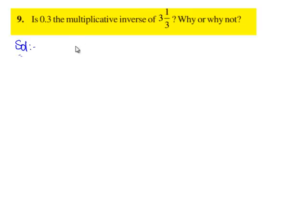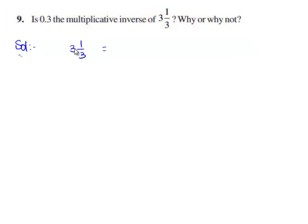The given mixed fraction is 3 1 by 3. Let us first convert this into its improper fraction. Therefore, 3 times 3 gives 9, and 9 plus 1 is 10. Therefore, 10 by 3 is the improper fraction of the given mixed fraction.